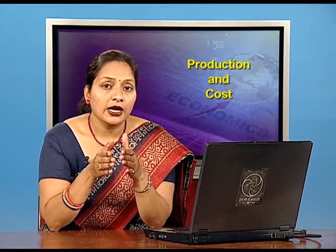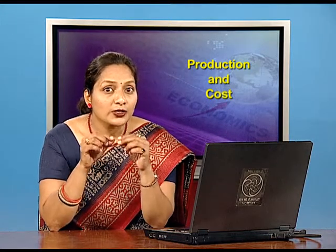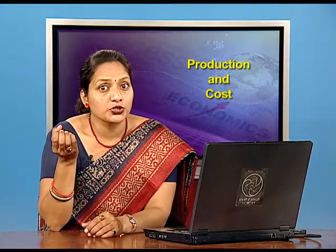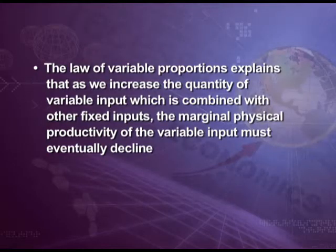The fourth assumption is that this law does not apply to cases where factors must be used in some fixed proportionate to yield one unit of output. The law of variable proportions explains that as we increase the quantity of variable input combined with other fixed input, the marginal physical productivity of the variable input must eventually decline. In other words, if we increase units of labour only while keeping other inputs fixed with technology given, output will increase initially, but after a point the increase in output by employing an extra unit of labour will become less and less.